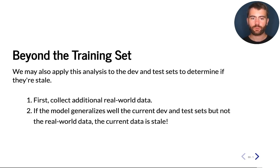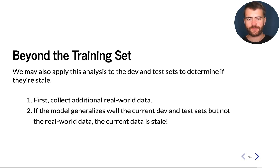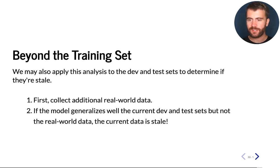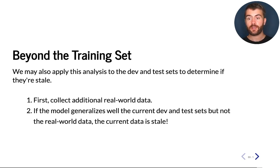In order to determine whether they're stale, we would collect additional real-world data and use it as another development or test set — we can call it the real-world data set. If our model generalizes well to the old development set but not to the new data set, then our old data set has become stale and it is time to update our data sets. In practice, when a machine learning system is deployed into production, data eventually does become stale.